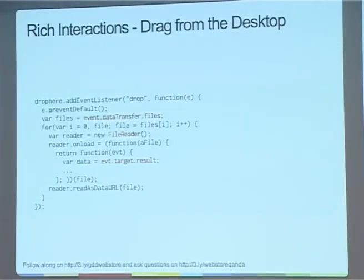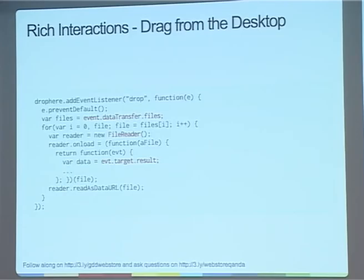Drag and drop is really powerful — it's one of those things you've always been able to do on desktop applications but never really on the web. You can do drag and drop on the web — you can drag elements from one side of the screen to the other — but getting data to and from the application has always been quite hard. In this case we have a drop handler: if we take a file from the desktop and drop it onto the page, the drop handler fires, we get the list of files, and then we can use the File Reader API — relatively new to Chrome and Safari — to actually get access to the file.